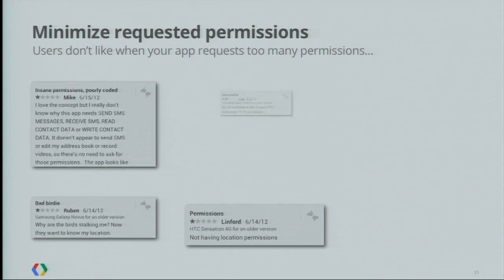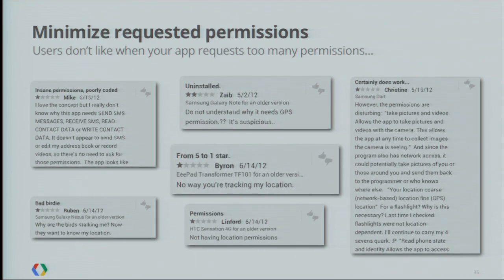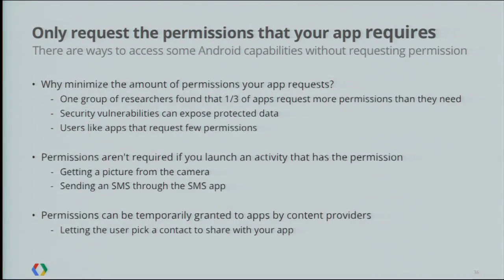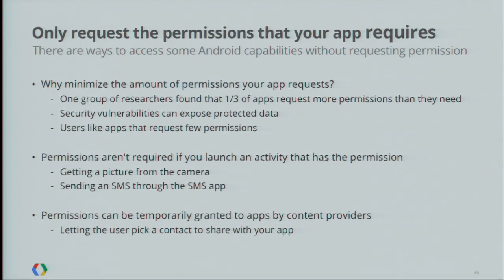Something else we'd like to talk about is minimizing the permissions that your app requests. Requesting too many unnecessary permissions can get you a lot of bad reviews, but that's really not the only problem. A group of university researchers found that one-third of the apps they tested requested more permissions than they needed — permissions with no code that actually used them. This is a problem because if there's a security vulnerability in the app and a malicious app can run arbitrary code in the context of your app, they could take advantage of any of the permissions you requested that you yourself aren't even using.